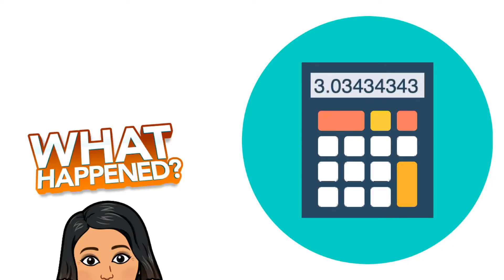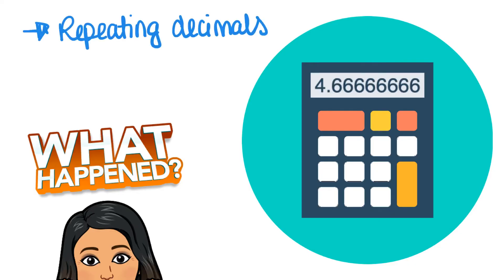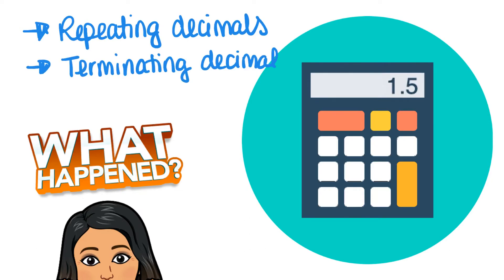Have you ever used your calculator and just got a really long decimal number? When we have numbers after a decimal point that repeat in a pattern, or this one, these are called repeating decimals.